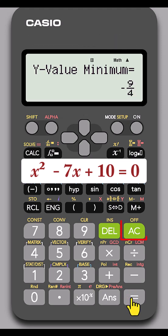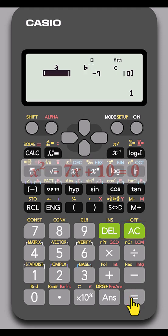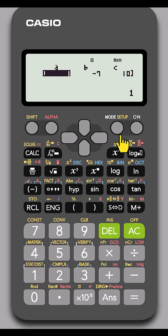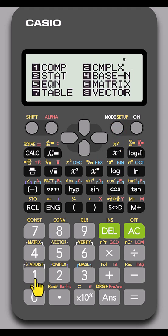To edit the coefficients, press AC or equals again. To clear the equation solver and return to regular computation, press MODE, then 1.